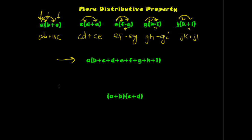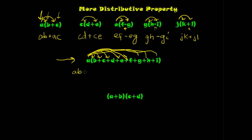This one looks really complex, but when you use the distributive property it's not bad at all. What you really have is a times b plus a times c plus a times d plus a times e plus a times f plus a times g plus a times h plus a times i — you just distribute all the way through each term.